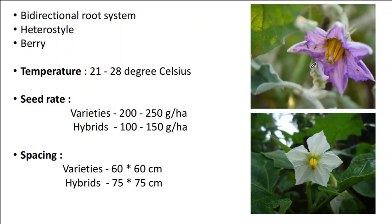In Brinjol you can observe four types of heterostyly — four types of style nature. The first is long style, which contains a larger ovary. The second is medium style, which contains a medium-length style and a medium-sized ovary. The third is pseudo-short style, which contains a short style and a rudimentary ovary. The fourth is very short style, which also contains a rudimentary ovary.